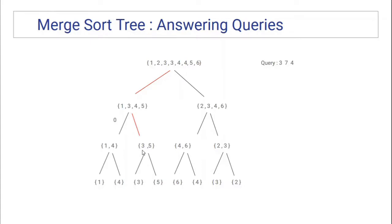But traversing each element would make the whole query take O(n) time in the worst case, and that is not good — if you are going to traverse the whole range, what is the point of creating the segment tree? So instead, consider this sub-problem: given a sorted array, how many elements are strictly smaller than k? You can answer this using binary search — find the first element which is k or greater than k, and everything before it is strictly smaller.